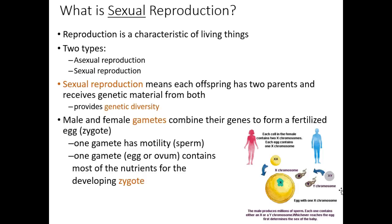In sexual reproduction, which is done in humans, that provides a lot of genetic diversity, because how we assort the chromosomes and genes to make a child is pretty unique. You'd have to have, I think, a couple billion children to basically have two children that could be statistically exactly the same.